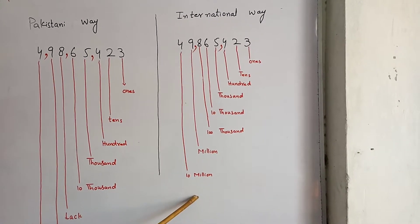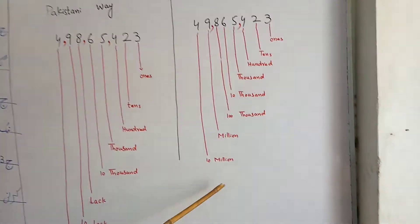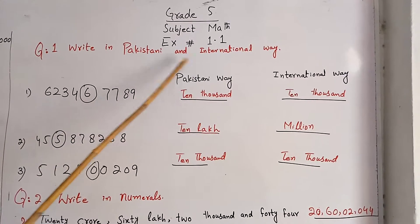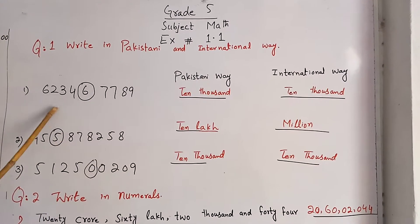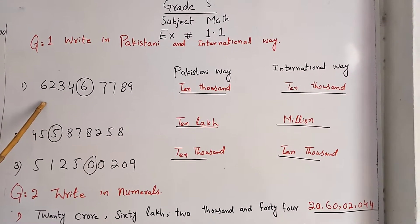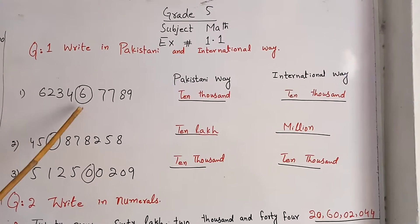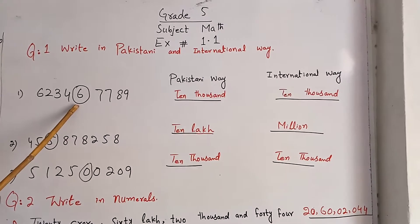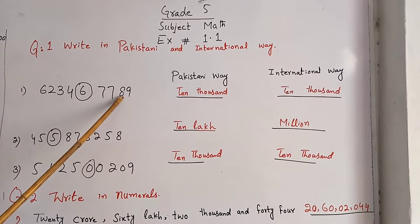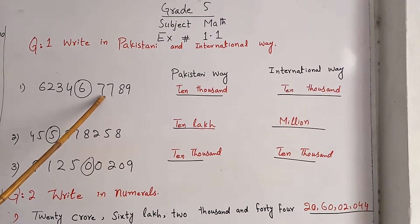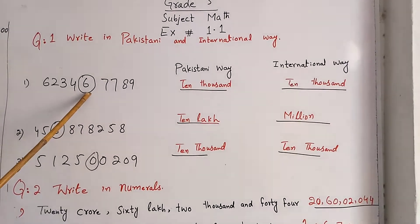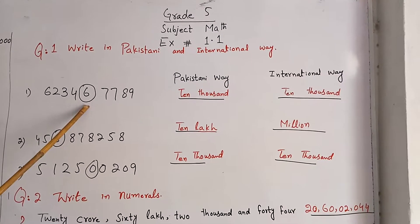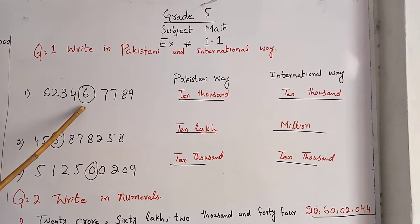Now we will solve the questions of the exercise. Our question number 1 is: Write in Pakistani and international way. We have a number here and we have to check the place value of the circled number. Now, this is ones, tens, hundreds, thousands, ten-thousands — and you know very well that 10,000 is the same in both Pakistani way and international way.